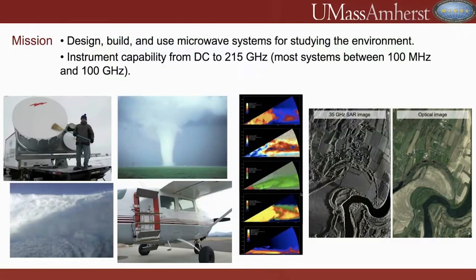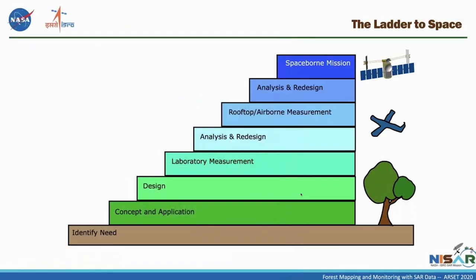At UMass, the Microwave Remote Sensing Laboratory designs, builds, and uses microwave systems for studying the environment. We work everywhere from very low frequency up to hundreds of gigahertz — most systems are between 100 megahertz and 100 gigahertz. We study severe weather like tornadoes and hurricanes, snow, and we have access to a small Cessna that flies out of an airport just five miles from campus. We can actually create our own synthetic aperture radar images. In essence, we work on basic concepts and work our way up to creating remote sensing instruments that might ultimately end up in space on a satellite platform.